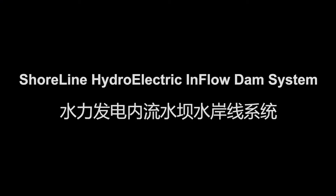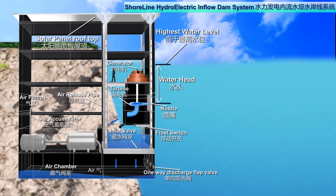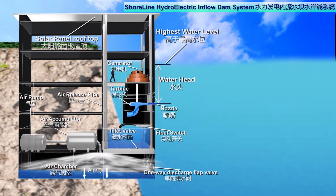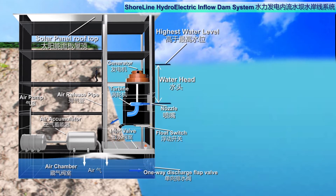A solution is to build hydroelectric inflow dams which are scalable according to electricity demand and available funds. Such hydroelectric inflow dams are located in a body of water or along water shorelines to harness renewable potential energy. The present invention describes a hydroelectric inflow dam system where water flowing into the inflow dam continuously rotates a turbine and a generator to produce electric power.